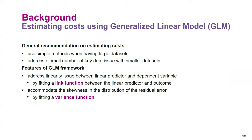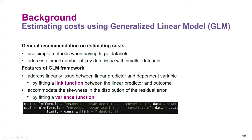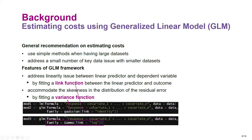The general recommendation is to use simple methods for large datasets and adjust for key data issues in smaller datasets. The generalized linear model (GLM) provides such features as a simple method. GLM adjusts the non-linear relationship between the linear predictor and dependent variable via a link function, and accommodates skewness in residual error distribution via a variance function. Gaussian identity link represents standard linear regression; different families can be selected easily in R.